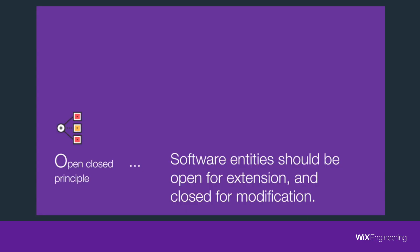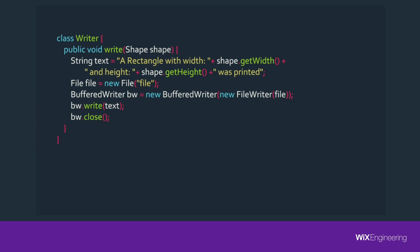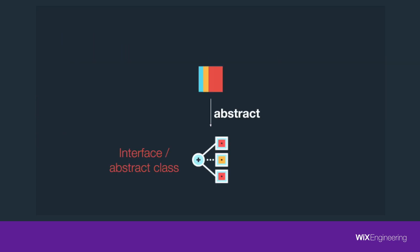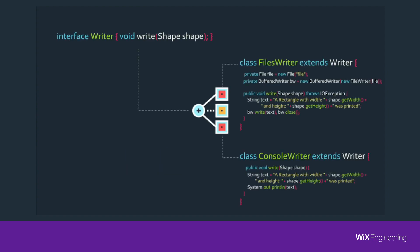The second principle is the Open-Closed Principle. Software entities should be open for extension and closed for modification. It means that new behavior comes with new code, not by changing the old one. Let's take a look at how Writer is implemented. What if I would like to change the library I used to write with? What if I would like to print to the screen instead of writing to a file? In either of those options, the concrete implementation details of Writer would have to change. The solution is to rely on abstractions — whether it's full abstraction like an interface or partial abstraction like an abstract class. Here we can see an interface Writer with two different detailed implementations. Remember, abstractions are always better than referencing concrete classes.